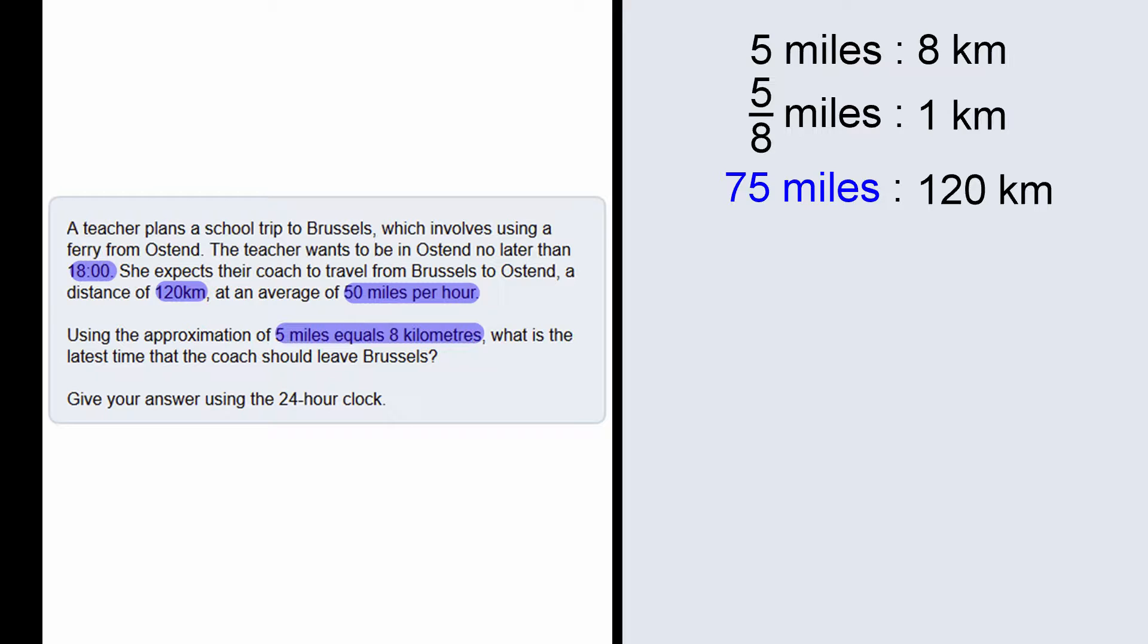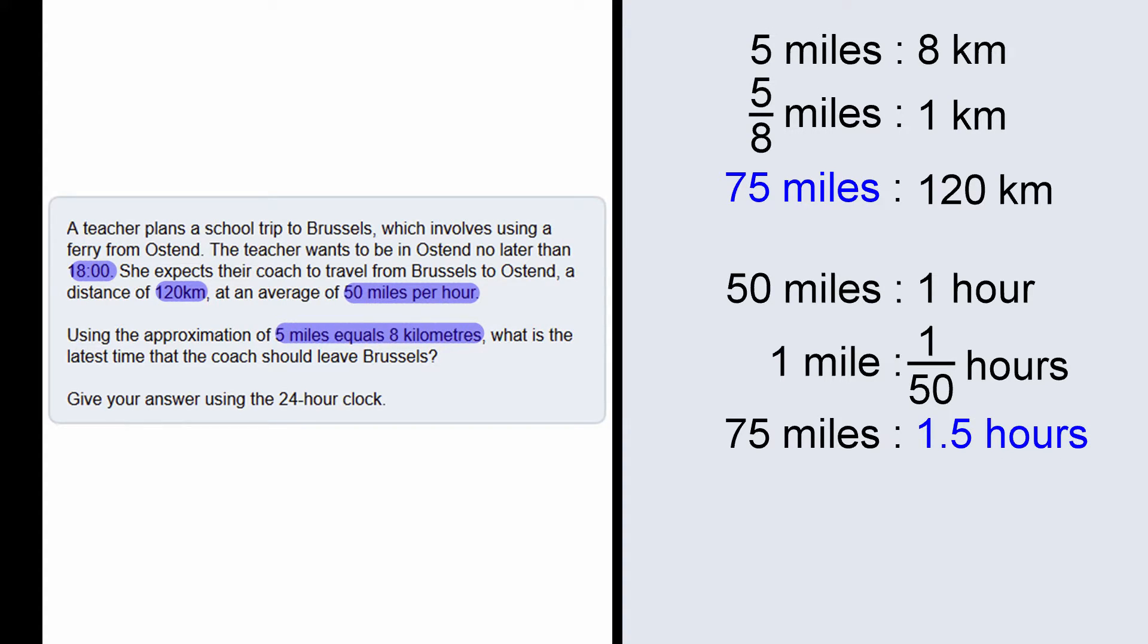Now we are given that the coach travels at 50 miles per hour. That means it does 1 mile in 1 divided by 50 of an hour. So it does 75 miles in 75 divided by 50 of an hour, which is 1.5 hours or 1 hour 30 minutes.